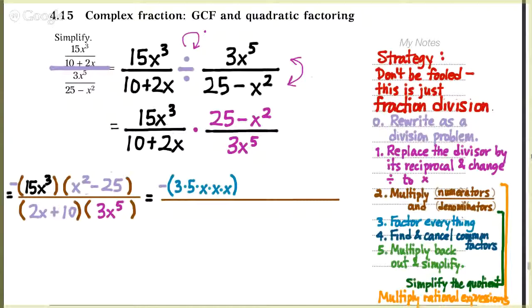15x cubed is 3 times 5 times 3 factors of x. x squared minus 25 is a difference of two perfect squares, because 25 is a perfect square of the number 5. This difference of squares factors into x plus 5 times x minus 5.